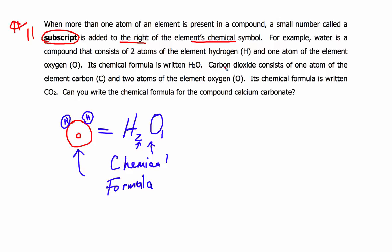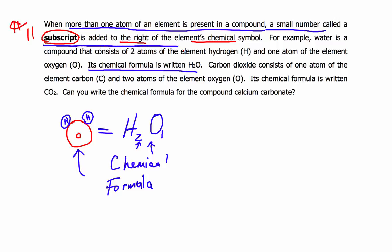Let's underline the main ideas here. When more than one atom of an element is present in a compound, a small number called a subscript is added to the right of the element's chemical symbol. We're going to underline that in blue and come back and catch it in green as well, because this helps us understand what a subscript is.